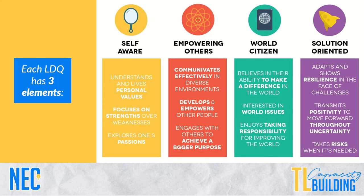Each leadership quality also has three elements so that we can be more specific about what each one means. The first is self-aware, which has: understanding and living personal values, focusing on strengths over weaknesses, and exploring one's passion. For empowering others, we have: communicating effectively in diverse environments, developing and empowering other people, and engaging with others to achieve a bigger purpose. World citizen includes: believing in their ability to make a difference in the world, being interested in world issues, and enjoying taking responsibility for improving the world. Lastly, solution-oriented is: adapting and showing resilience in the face of challenges, transmitting positivity to move forward throughout uncertainty, and taking risks when it is needed.